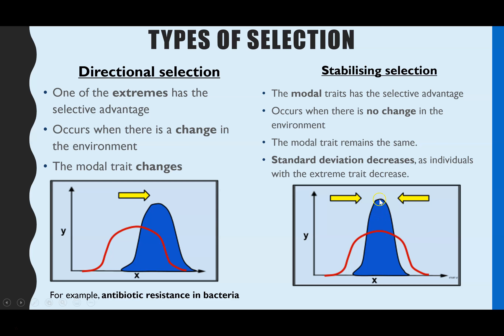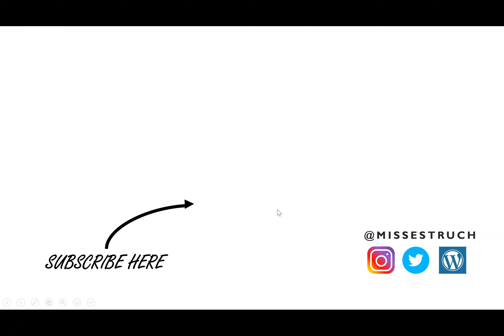The example linked to stabilising selection is human birth weight. If you are incredibly light at birth, you're more likely to have underdeveloped organs and complications that hinder your chance of survival. At the other extreme, very large birth weights can lead to complications in childbirth, putting both the baby and mother at risk. So middling birth weights are the selective advantage, and over many generations of human reproduction the middle trait is the most common — most babies weigh somewhere between six and nine pounds. That's it for genetic diversity and natural selection — please subscribe and give it a thumbs up if you found this helpful.